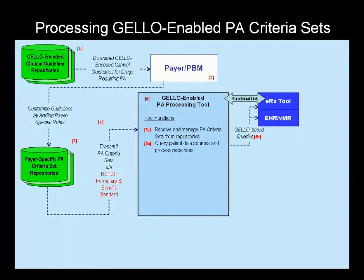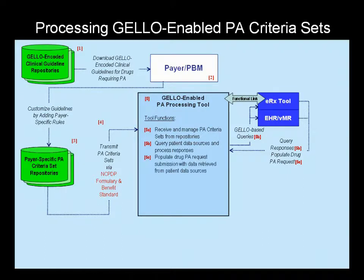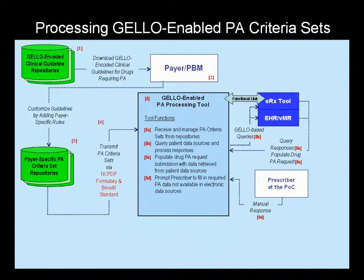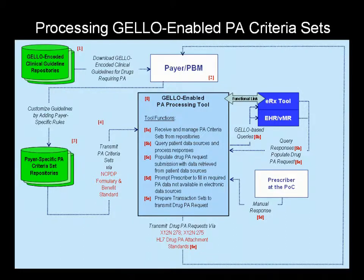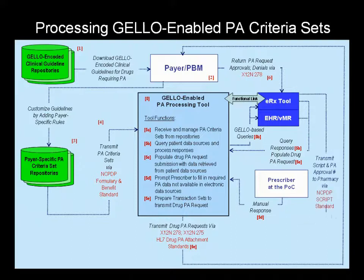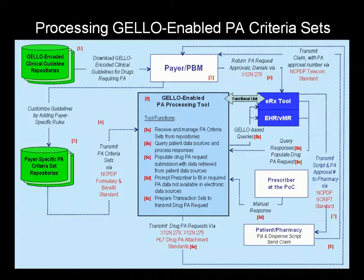When a prescriber wishes to prescribe a drug requiring prior authorization, the tool executes Jello-enabled PA queries against e-prescribing and electronic health record clinical data repositories for that patient. The tool returns the query responses to the PA processing tool and populates the drug PA request submission form with data retrieved from patient data sources. It then prompts the prescriber to fill in any required PA data not available from electronic data sources. The tool then prepares the transaction sets to transmit the drug PA request via X12 and HL7 messaging standards. Approvals, denials, and requests for more information are exchanged, and the PA request approval is sent to the pharmacy along with the prescription.